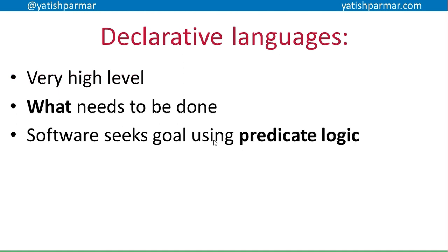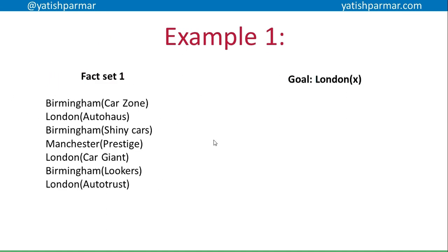Some declarative languages also involve searching through sets of data to achieve a goal using what we call predicate logic, because it's trying to prove something is either true or false. So you have data sets made of facts and rules, and then it searches through those trying to find and achieve a particular goal.